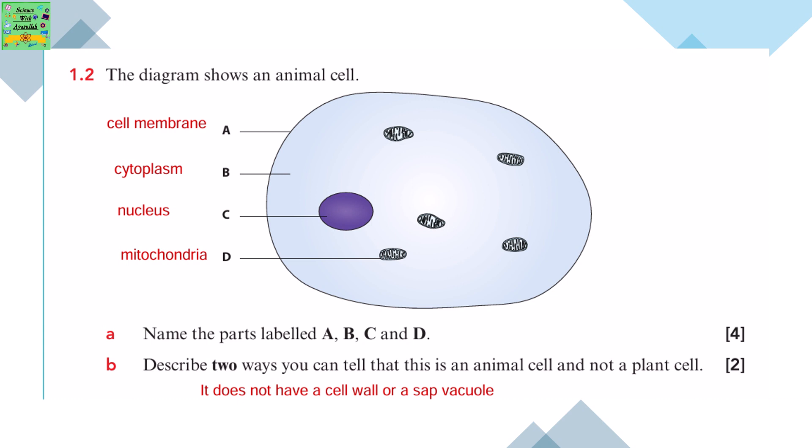In section B, you need to describe two ways you can tell that this is an animal cell and not a plant cell. You can see that there is no cell wall or a vacuole, so it does not have a cell wall or sap vacuole.